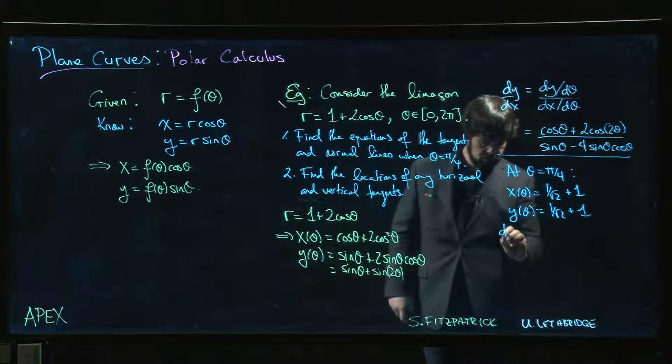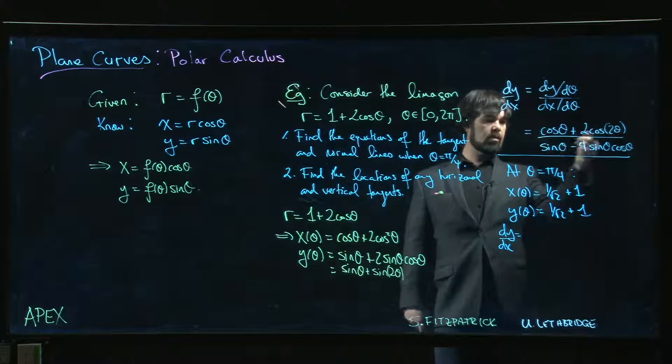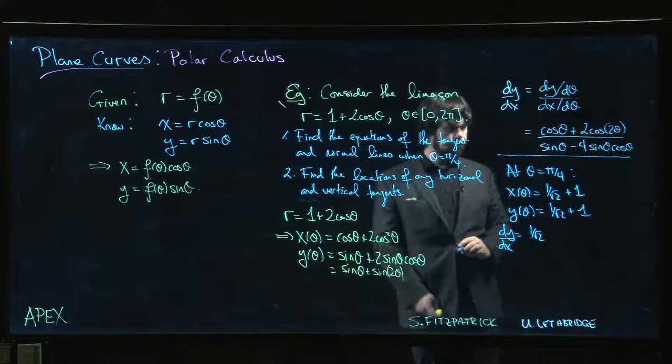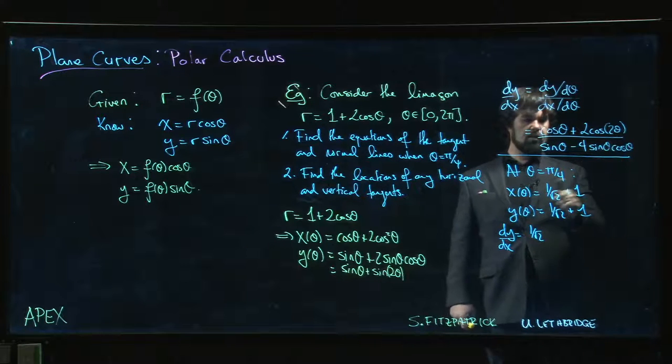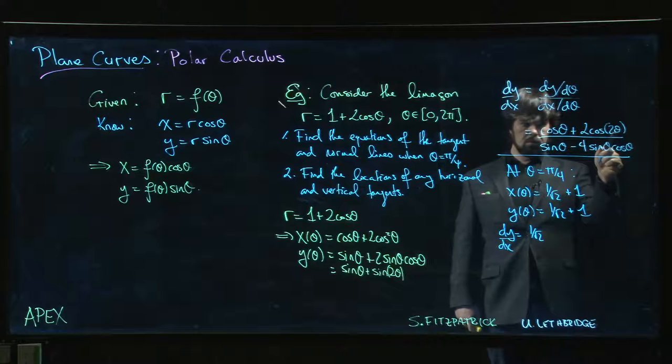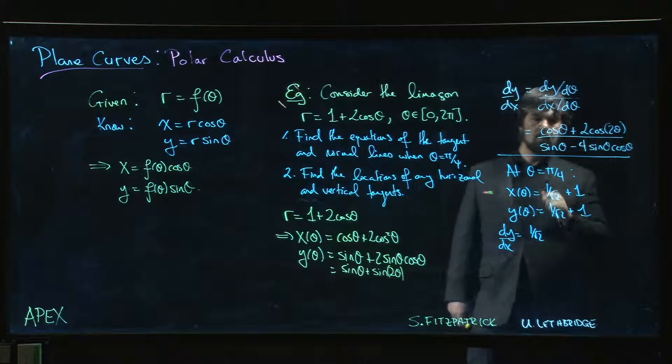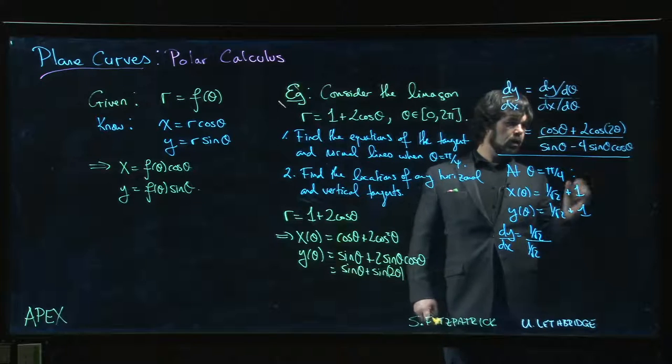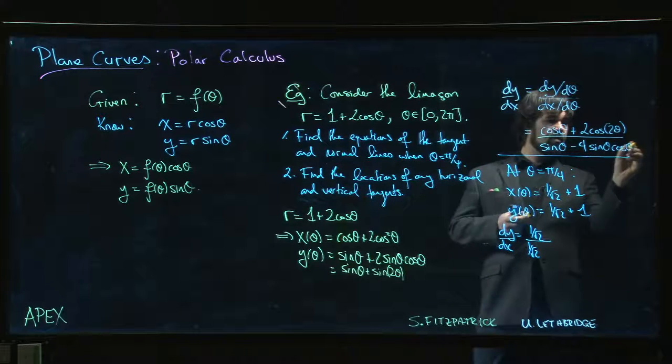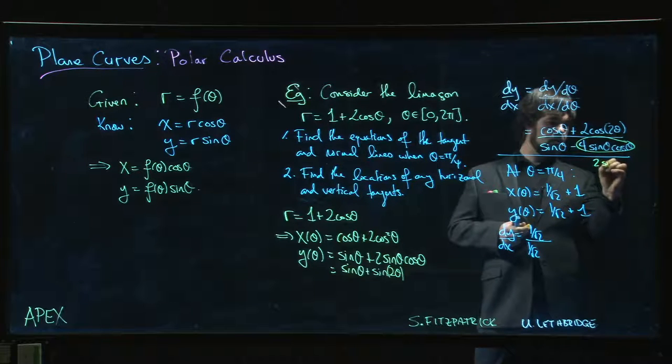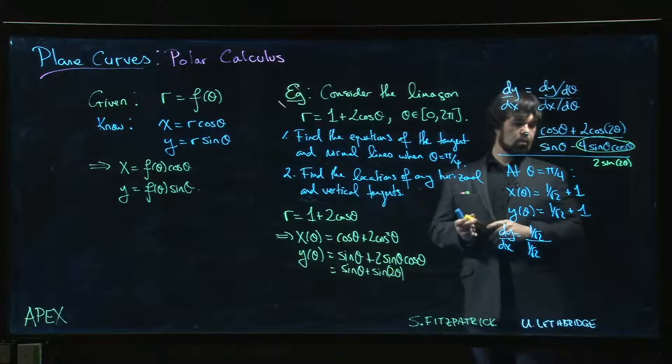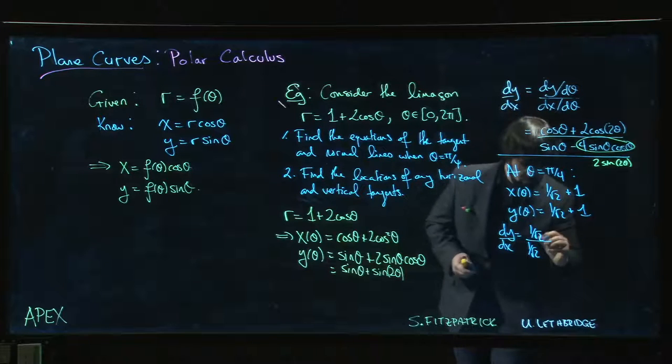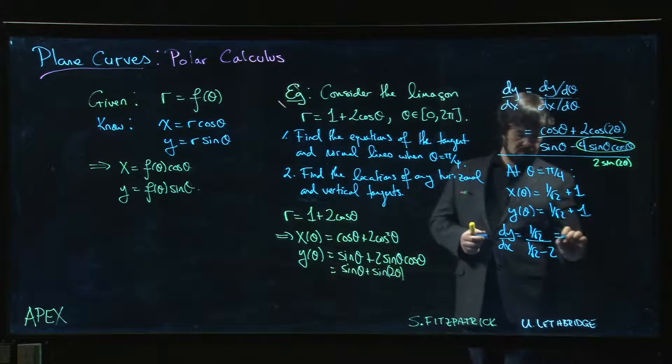And dy dx, we just put things in up here. So we're going to get 1 over root 2. When theta is pi over 4, 2 theta is pi over 2, cosine of pi over 2 is 0. So this is gone, we just get 1 over root 2. On the bottom, we have 1 over root 2. And we might find it convenient to notice that this here is 2 sine 2 theta. And so we're putting in pi over 4, sine at pi over 2 is 1. So we get minus 2 there. 1 over root 2 minus 2. So that's the slope of our tangent line.